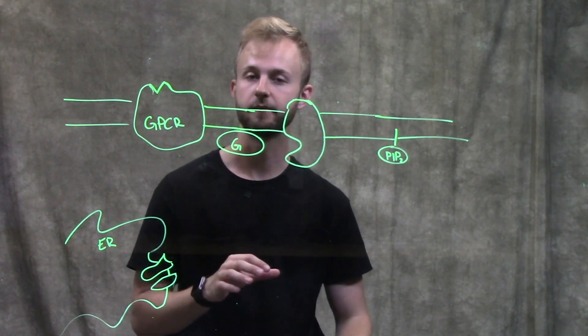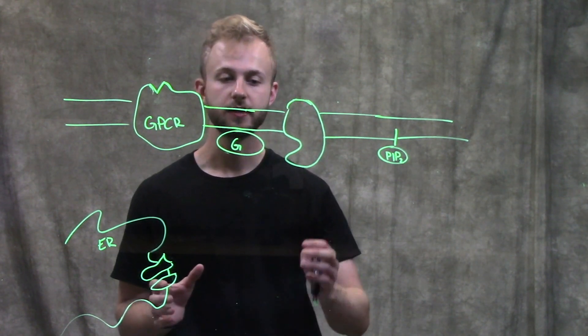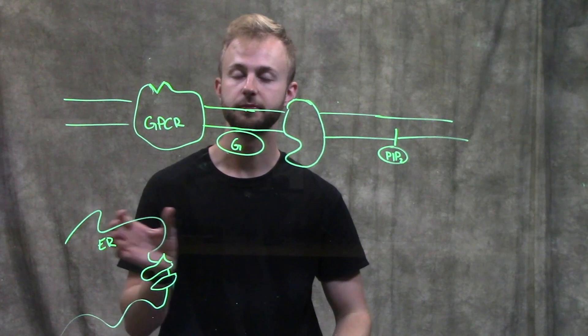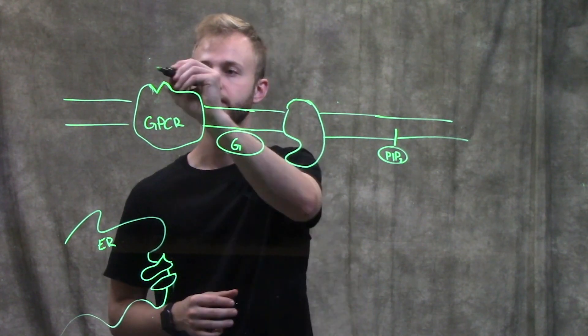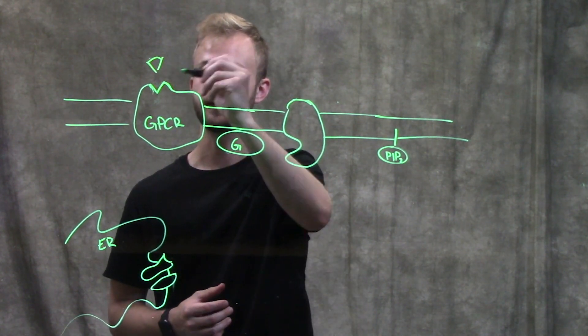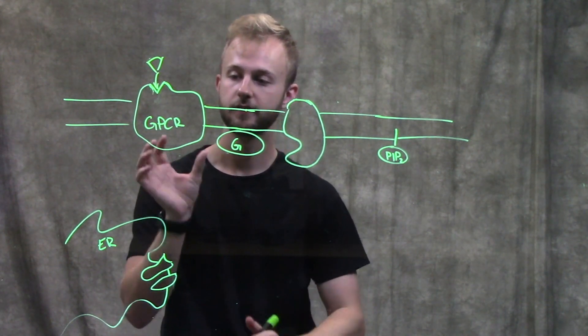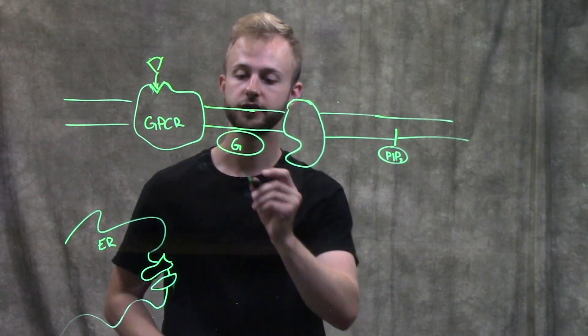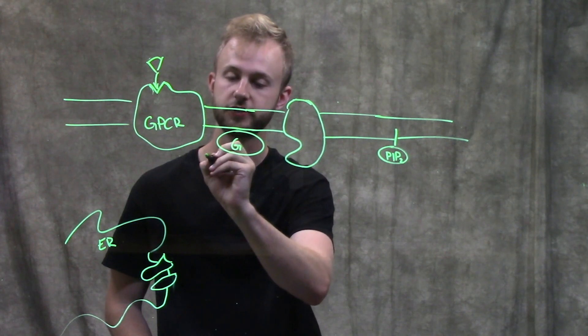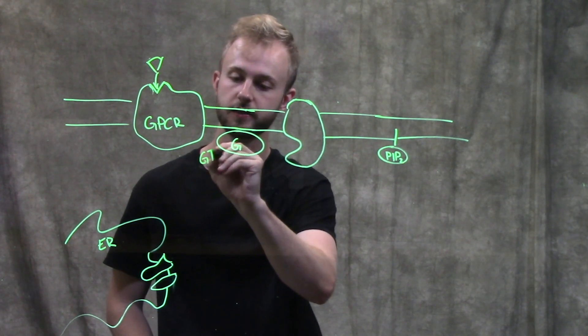Let's start with cyclic AMP. Cyclic AMP is going to be produced through a GPCR signaling pathway. We'll have our ligand that will bind to our GPCR and when that happens, that's going to cause our G protein to exchange a GDP for a GTP.